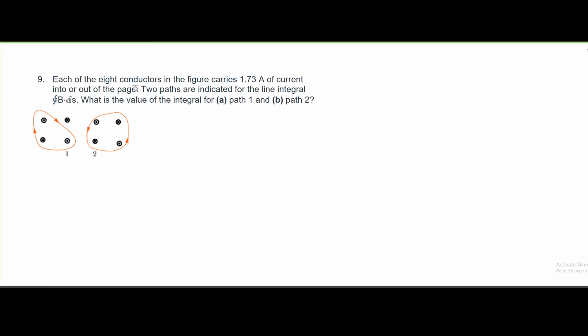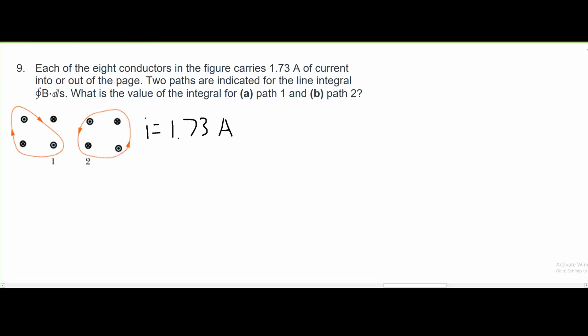For number nine, we have each of the eight conductors in this figure carries a 1.73 amp current into or out of the page. Two paths are indicated for the line integral of the magnetic field times ds. We are asked what is the value of the integral for path one and path two.